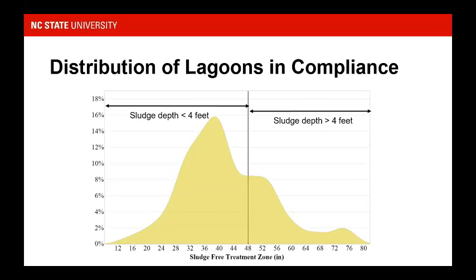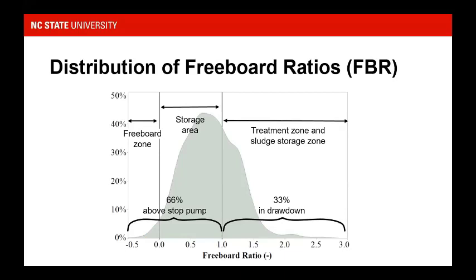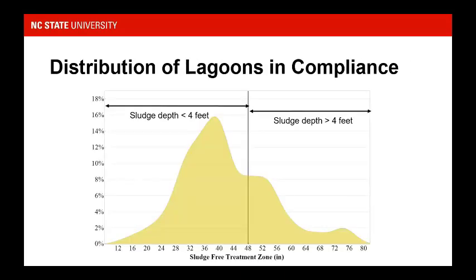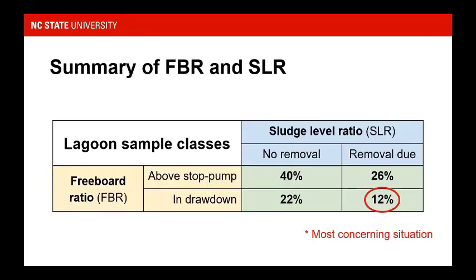Looking at who is technically in compliance to draw down during hurricane season, only about a third of farms have that capability — about two-thirds don't have the necessary depth. Comparing this to our freeboard data where about a third were also in drawdown, whenever farmers have the ability they're taking advantage of it and drawing down to avoid risk. We're most worried about the situation where lagoons are in drawdown and sludge removal is needed — sludge levels are high and liquid levels are low — creating a higher chance that solids from the sludge make their way into the effluent and we apply excess nutrients.